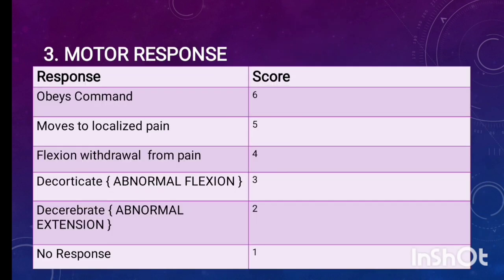Then the third component is motor response. First one is obeys command and the scoring is 6. To check the response, ask the patient to lift up the hand or open their hands or ask them to grasp your fingers as hard as they can or you can ask the patient to open his or her mouth. If all these things the patient is doing successfully, you can give this score 6. This kind of patient can be seen in the general ward.